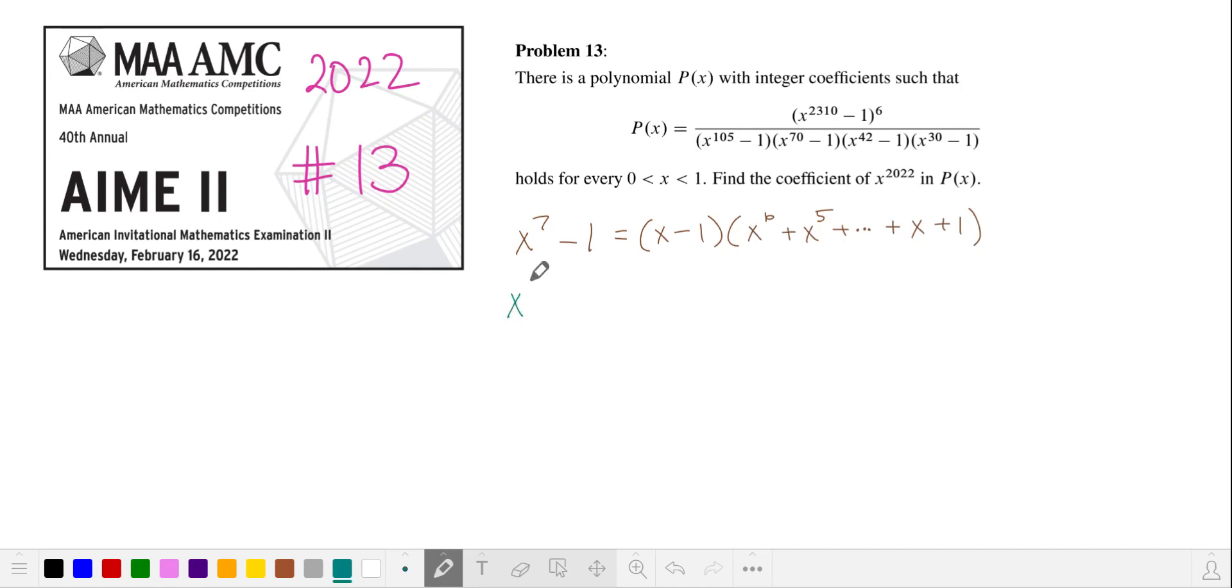If we double the power of x from 7 to 14, we can write this as x squared to the 7th power and do the same factorization with x squared minus 1 pulled out. And in the second factor, we replace all these powers of x with the same powers of x squared.